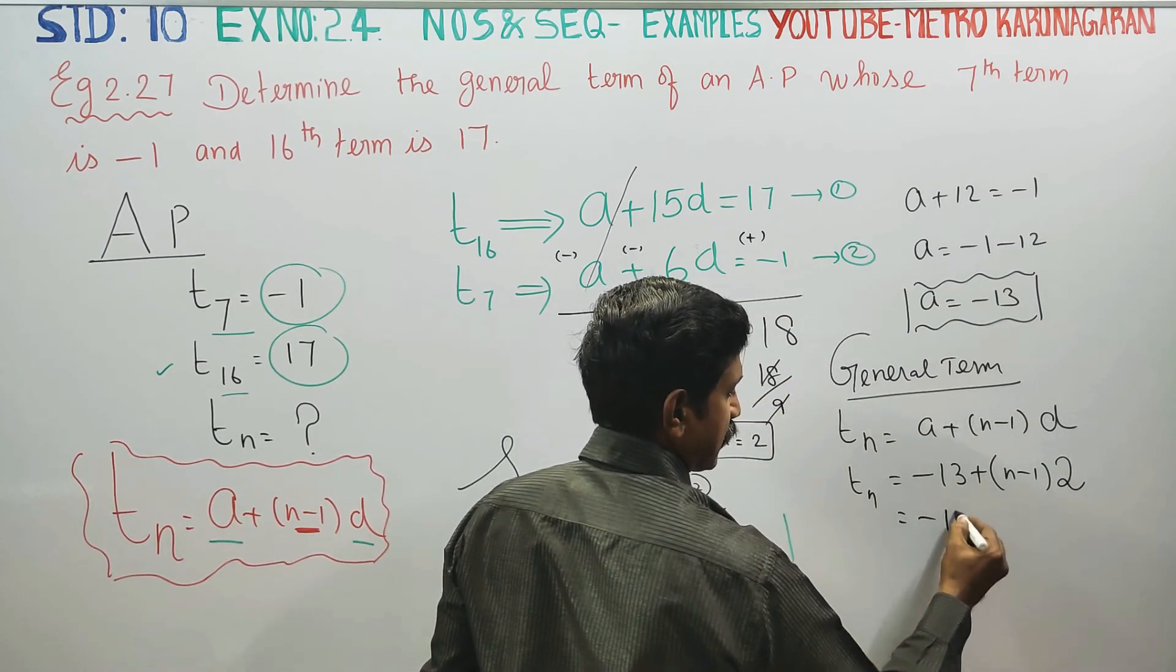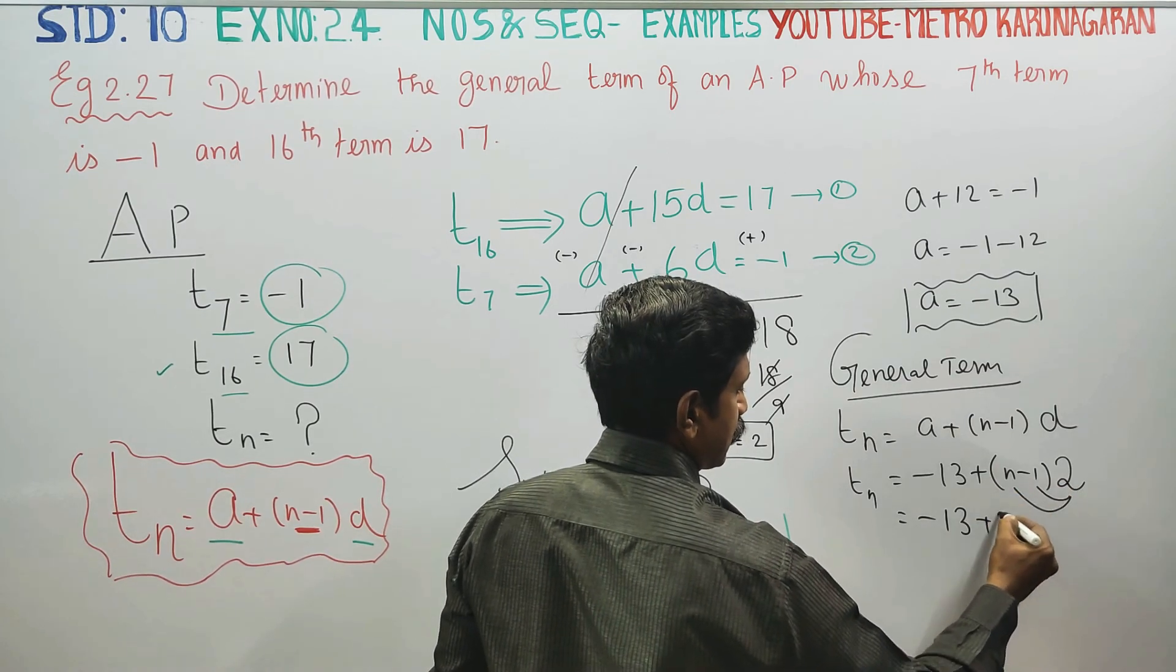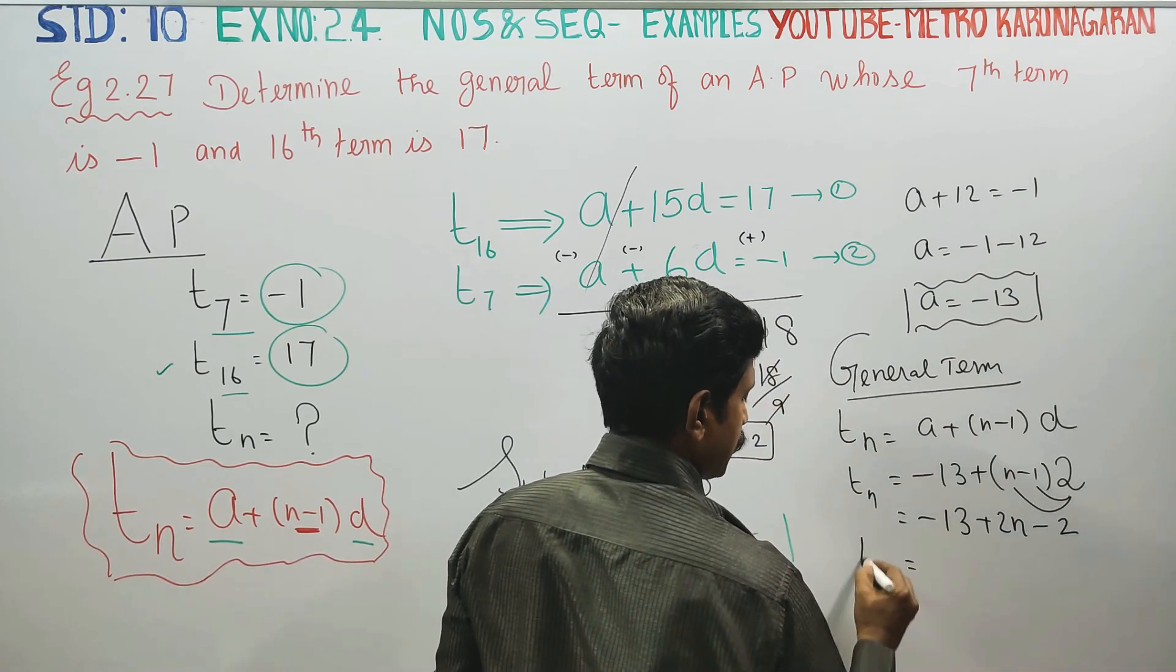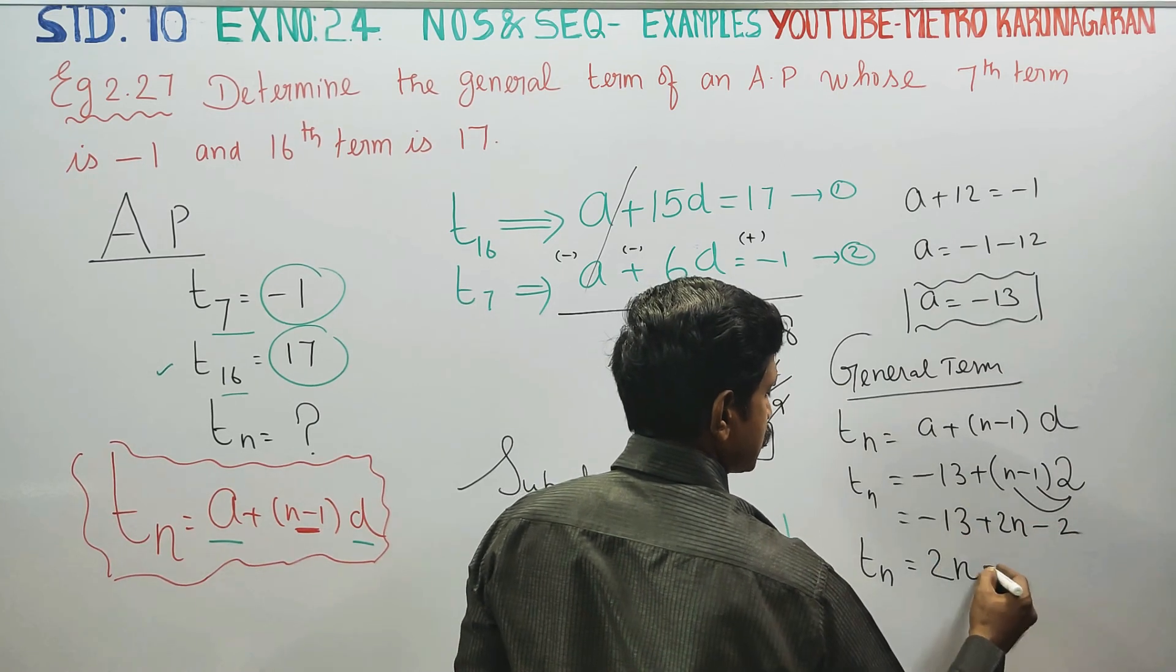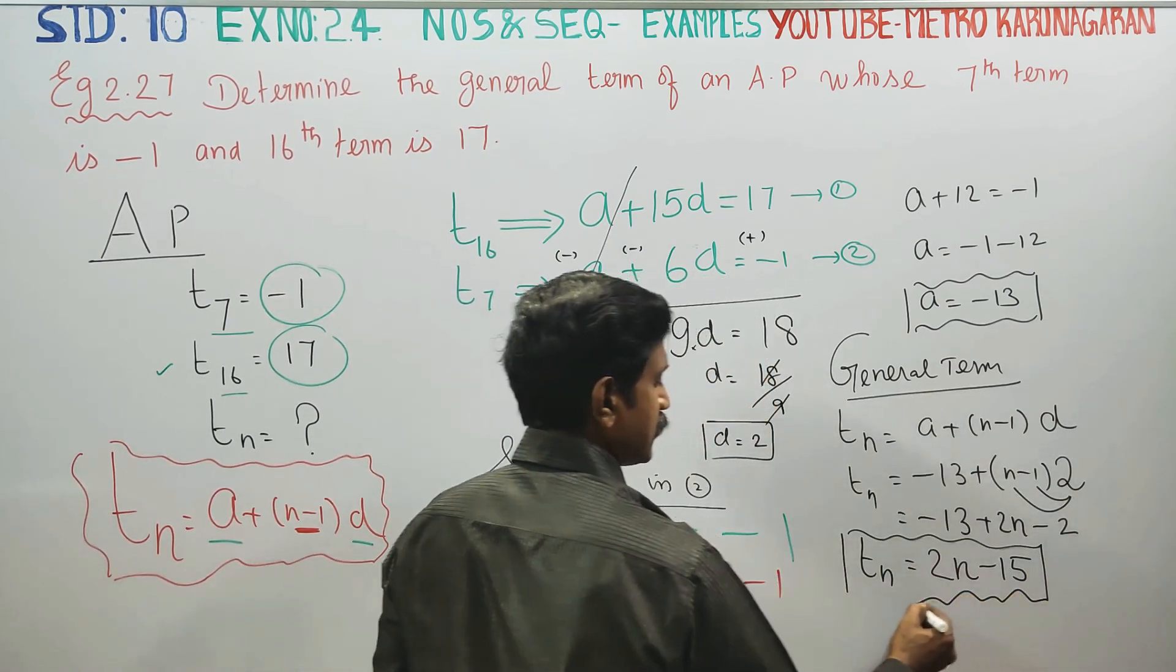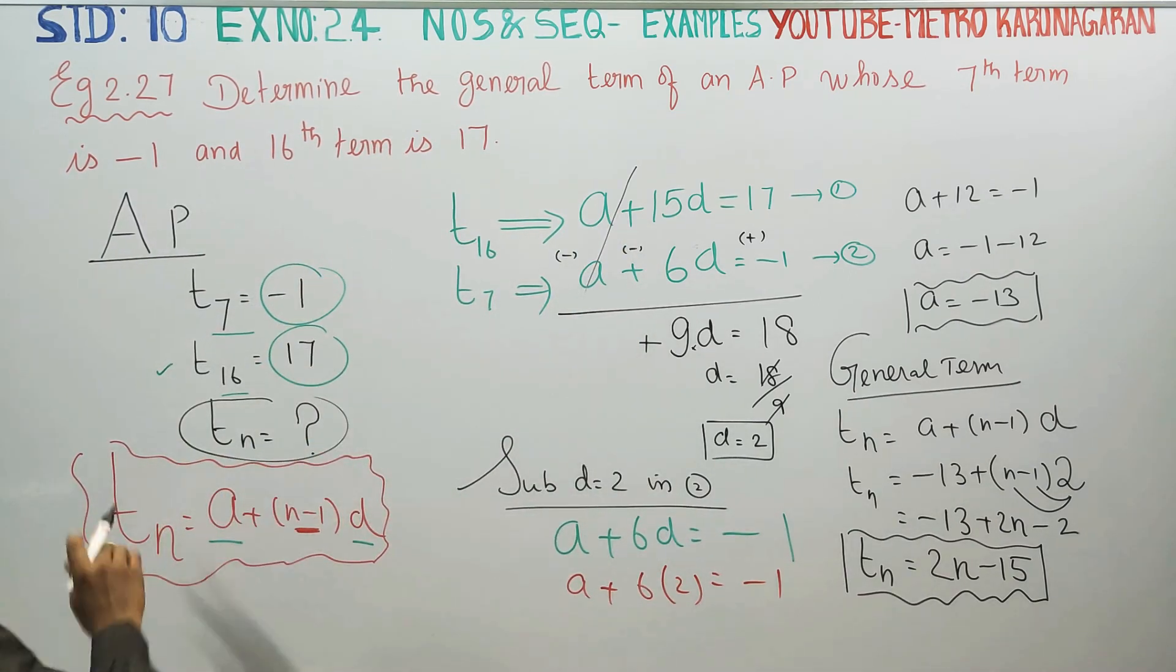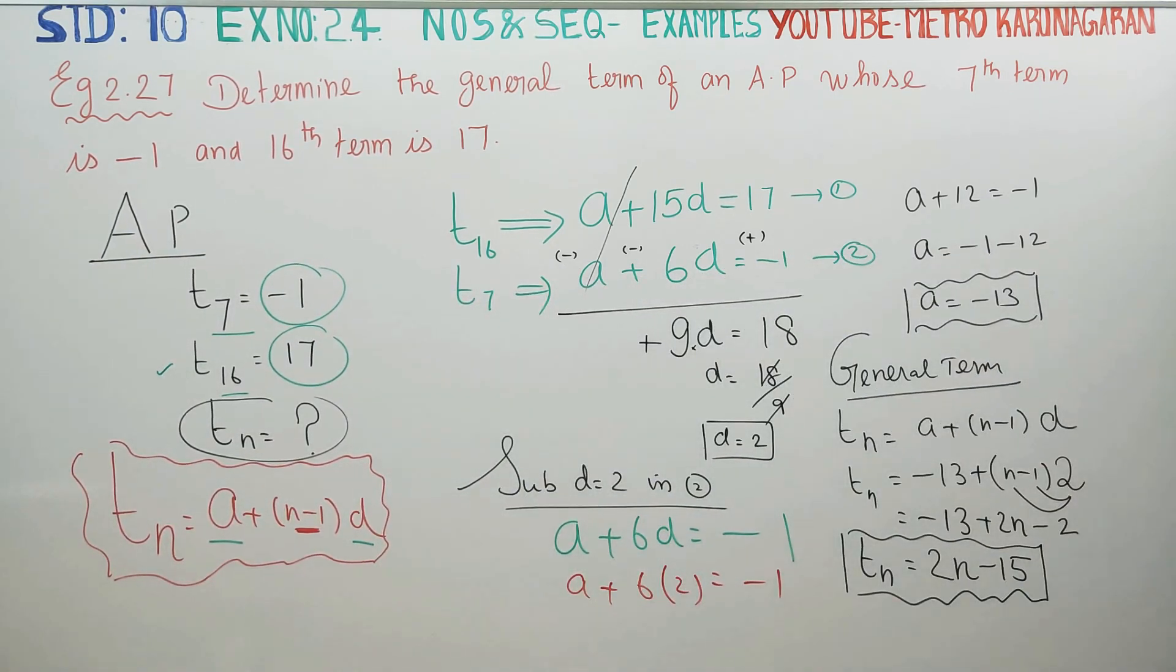Minus 13 plus 2 into N minus 1. 2 into N is 2N, minus 1 into 2 is minus 2. TN is equal to 2N minus 13 minus 2, which is 2N minus 15. This is your general term.